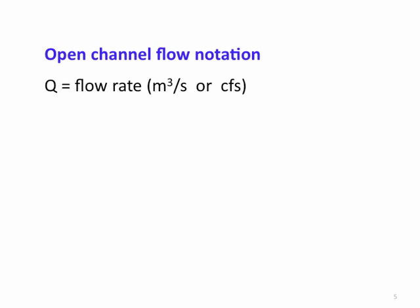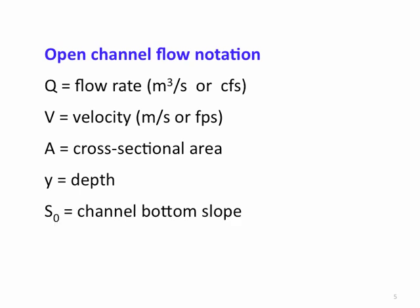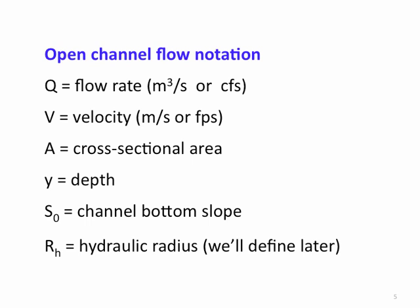Open channel flow has its own notation, sometimes similar to pipe flow. Q is our flow rate in meters cubed per second or cubic feet per second. V is velocity in meters per second or feet per second. A is cross-sectional area in meters squared or square feet. Y is our depth. S-sub-zero is the channel bottom slope. R-sub-h, which we'll define later, is our hydraulic radius.